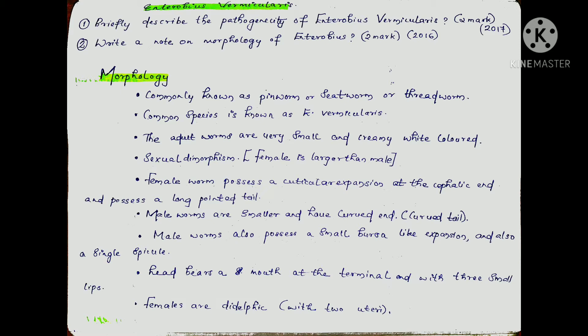First is morphology. Enterobius vermicularis is commonly known as the pin worm, seed worm, or thread worm. The adult worm is very small and creamy white in color. They also show sexual dimorphism — the female is larger than the male. The female worm possesses a cuticular expansion at the cephalic end and a long pointed tail.